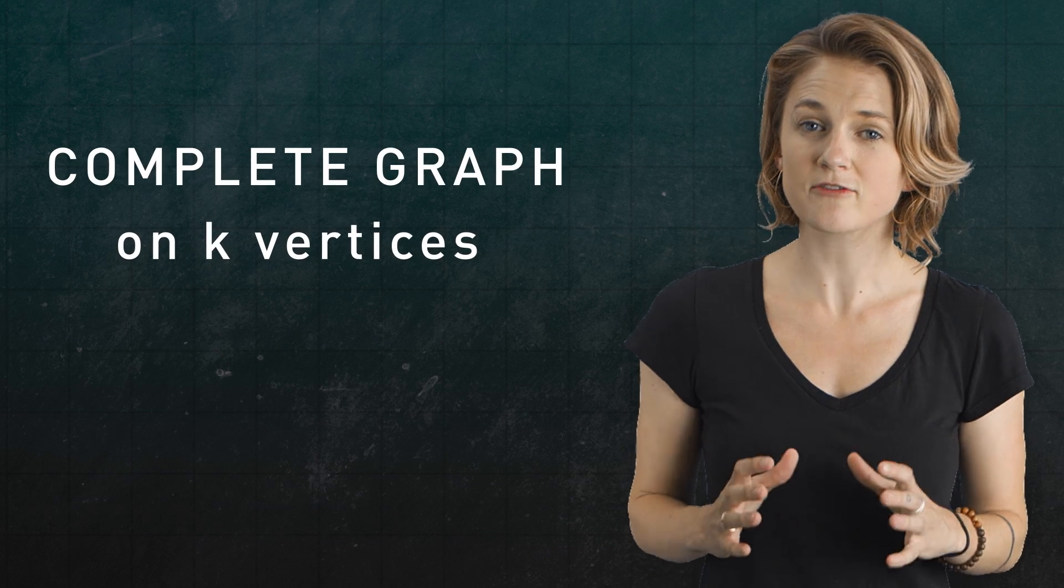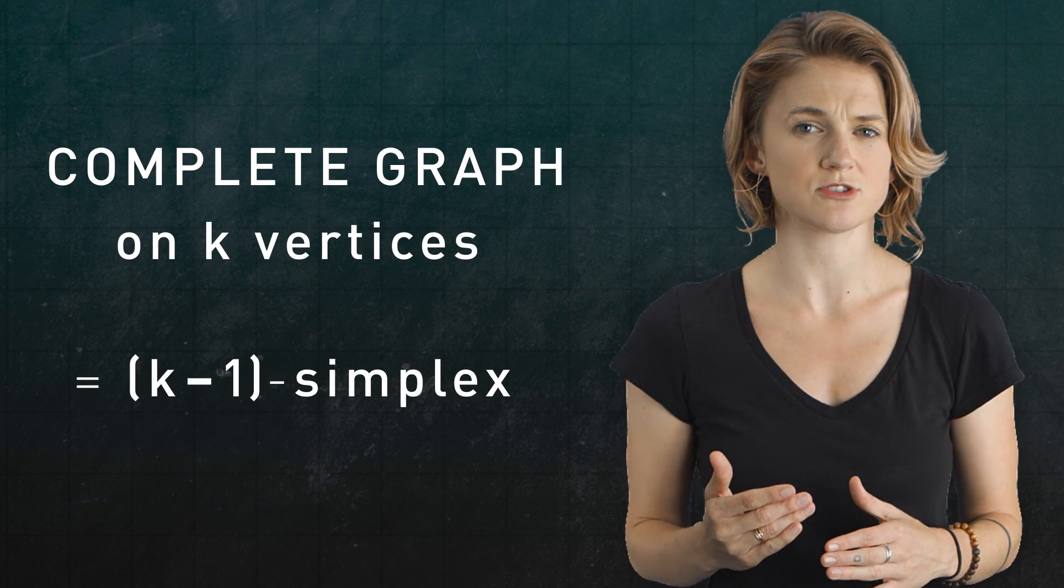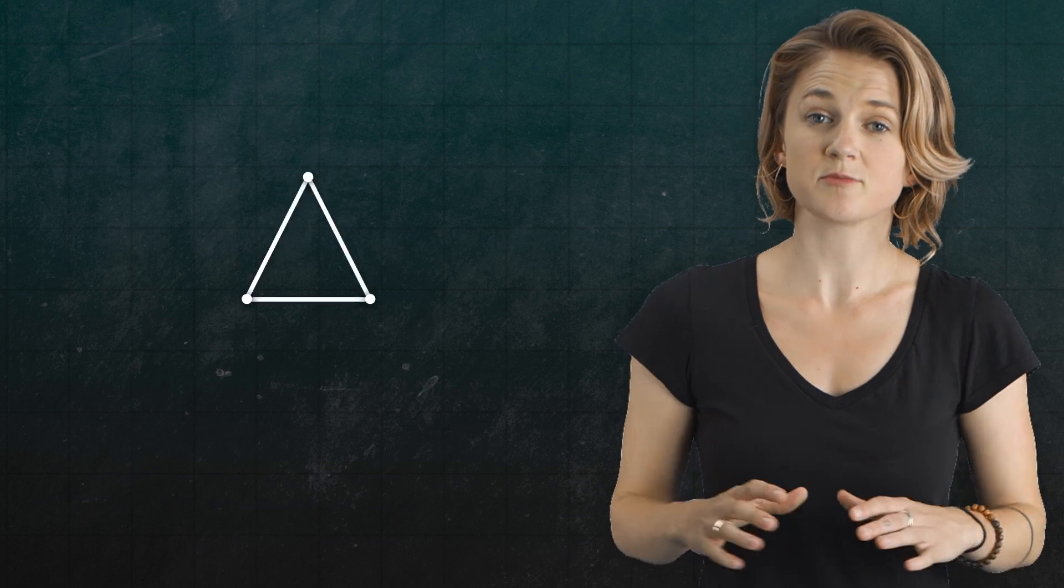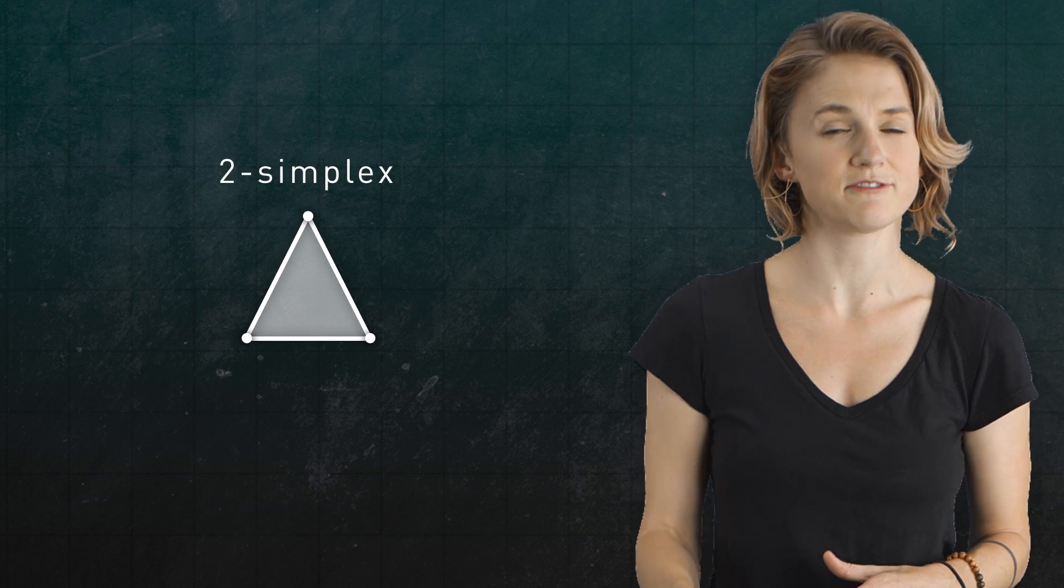The complete graph on k vertices will form a k minus 1 simplex, so it's k minus 1 dimensional. For example, this complete graph on three vertices becomes a two simplex when we fill in the two dimensional triangular face.